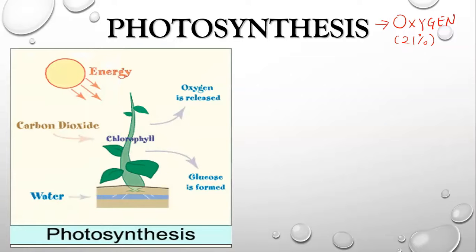The sun gives energy. Carbon dioxide and water from the roots get absorbed. In the chlorophyll — the green color pigment — these undergo a chemical reaction by which glucose is formed and oxygen is released.